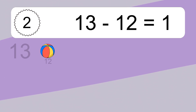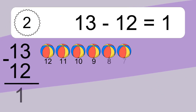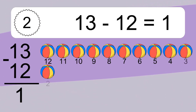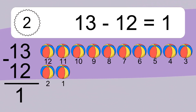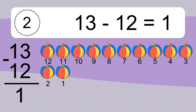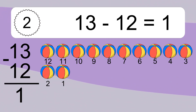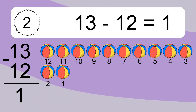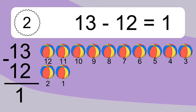13 minus 12 equals what? 13 minus 12 equals 1. Let's count it: 12, 11, 10, 9, 8, 7, 6, 5, 4, 3, 2, 1.